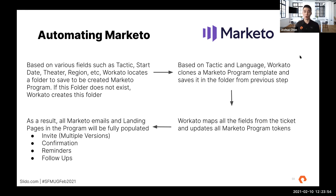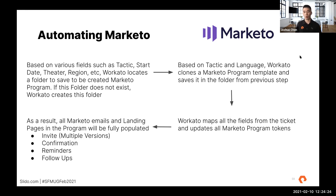Once that campaign folder has been located or created, Workato then clones the correct Marketo program template based on the tactic and language on the ticket, and saves that program into the folder. The next step is tokenization: using the fields on the ticket, we map and update all the tokens within the program. This populates everything — the invites (we have multiple versions so field marketers can choose), the confirmations, reminders, and follow-ups are all updated and pretty much ready to use.